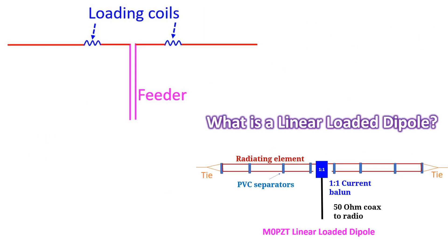Loading coils, though they make antenna size more convenient for mounting, cause loss of RF energy in the resistance of the coils, which is not zero. In a way, the design can be considered similar to the linear loaded dipole antennas, in which instead of loading coils, the excess length is folded back with separators.